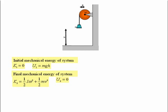There's no work done by other forces, and therefore, equating the initial mechanical energy to the final mechanical energy, we have mgh is equal to a half I omega squared plus a half mv squared.